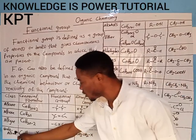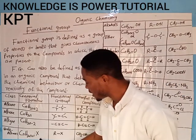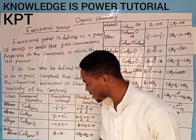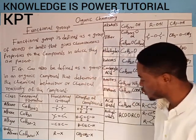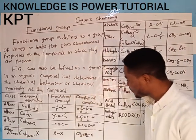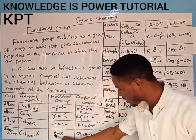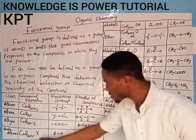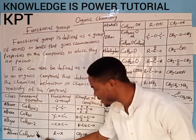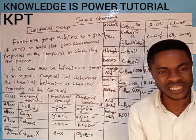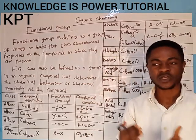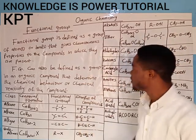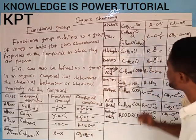But as for the haloalkanes, they contain halogen. So this X here represents halogen, and this R here represents an alkyl group. So because haloalkanes contain halogen, they are not considered as hydrocarbons. Very important.